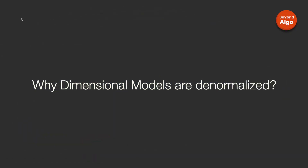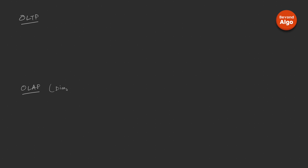I will explain why dimensional models are denormalized with a practical example. Suppose you have a data warehouse which takes data from some kind of transaction processing system. We have an OLTP system and we have an OLAP system where you are using a dimensional modeling technique. In your OLTP system, imagine that you have two different tables: a product table and a product type table.